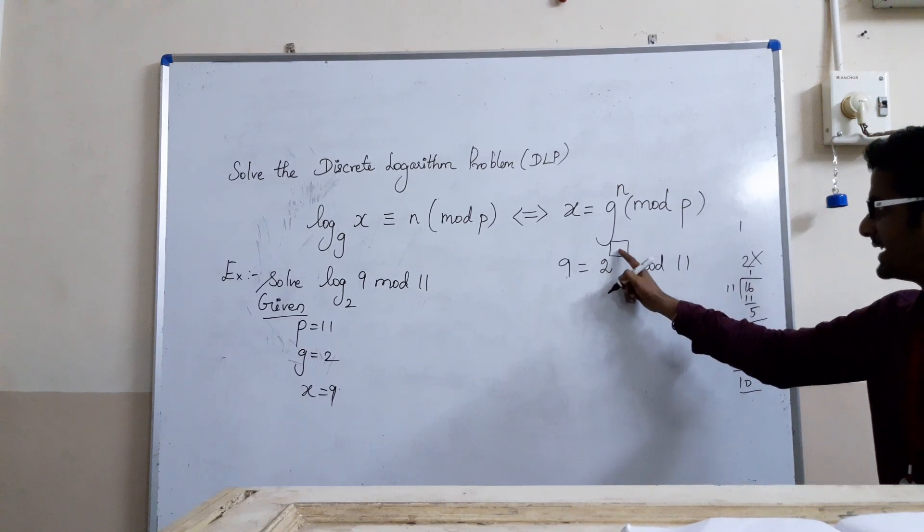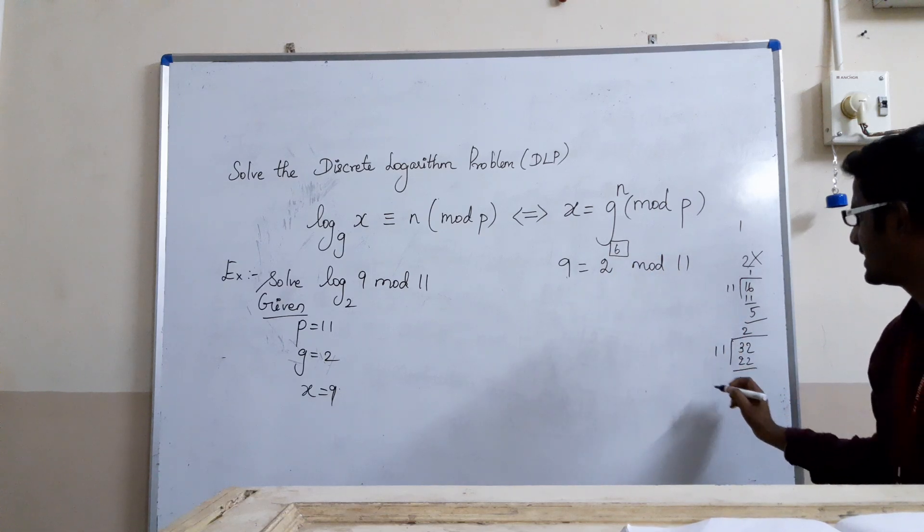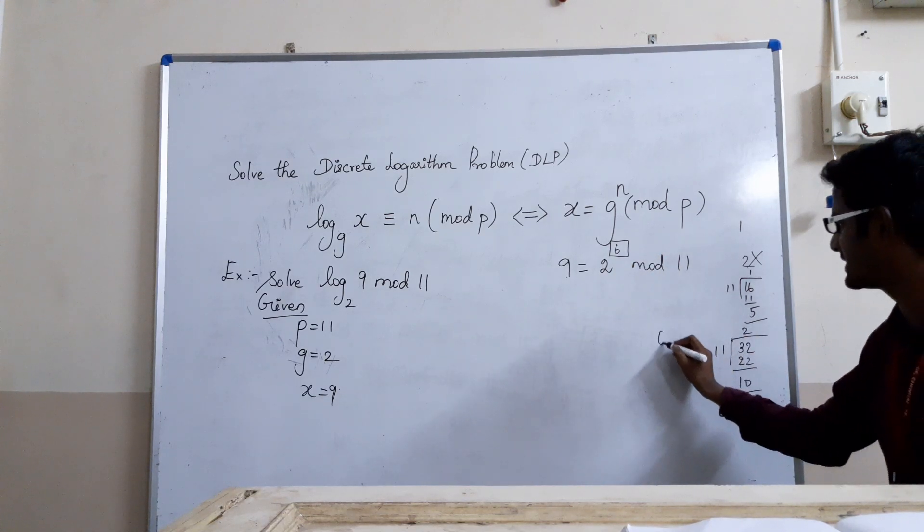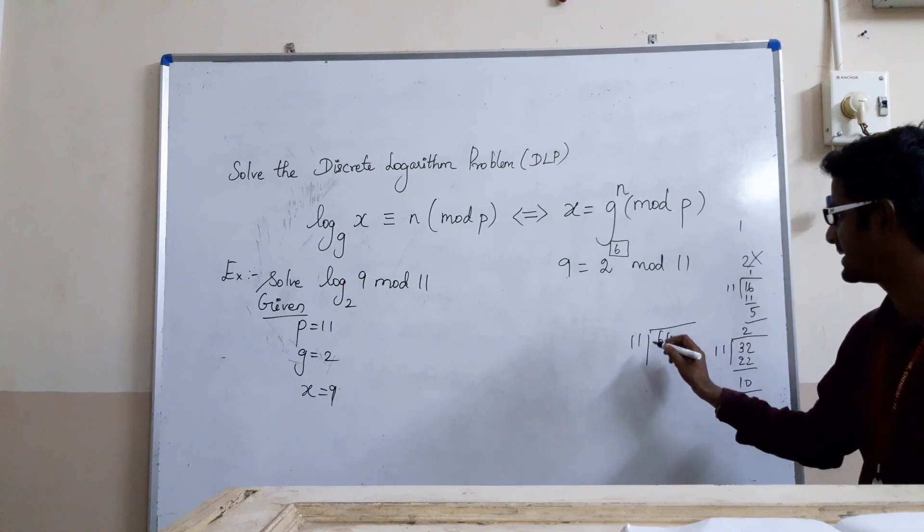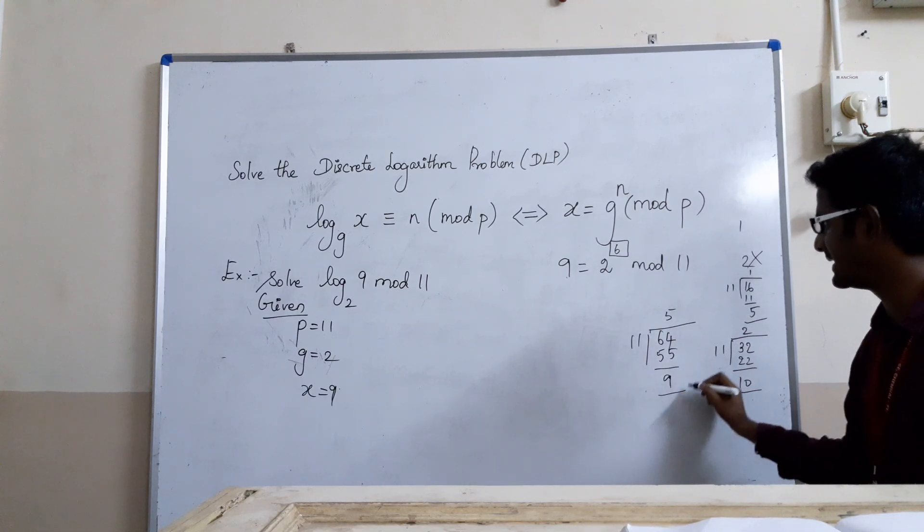Now, we want to find the exact number. So 2^6. We apply 6. 2^6 equals 64. 64 when divided by 11... 11 times 5 is 55, remainder is 9. Yes.